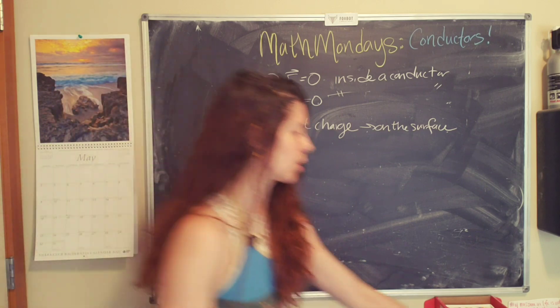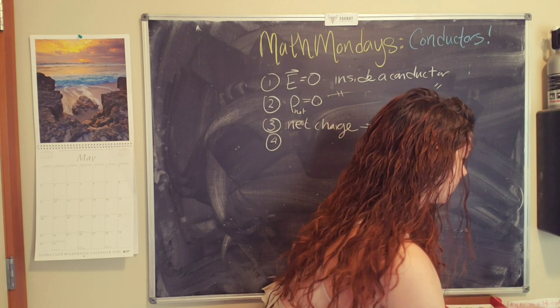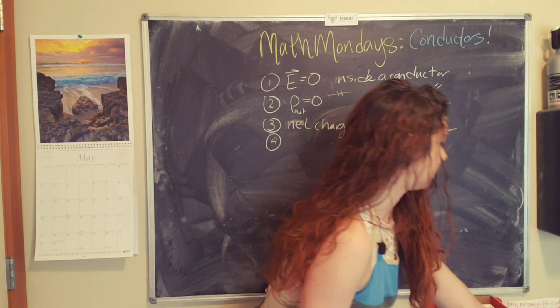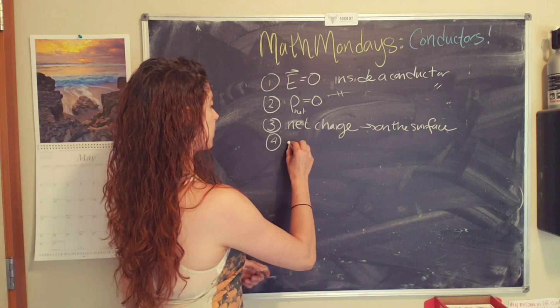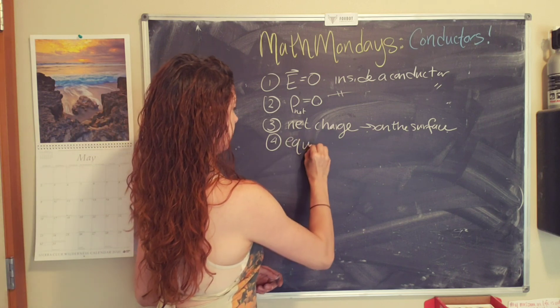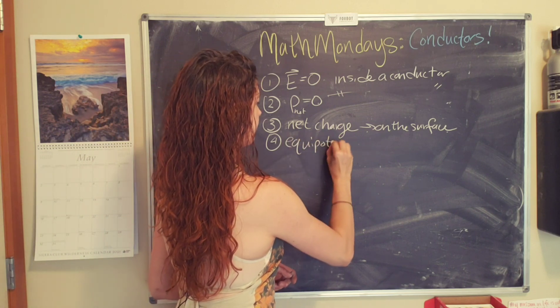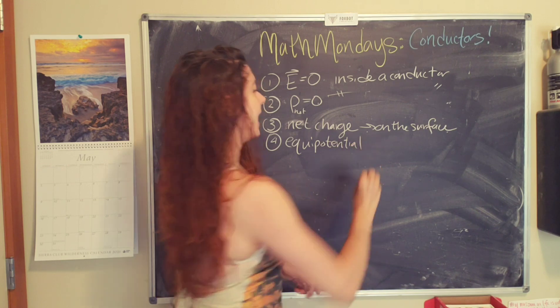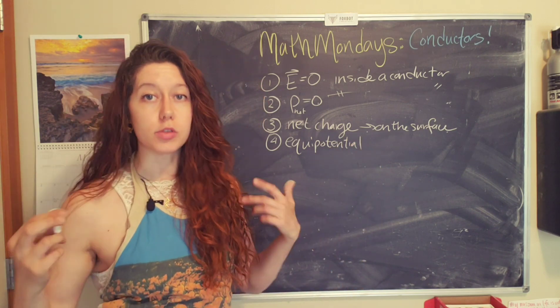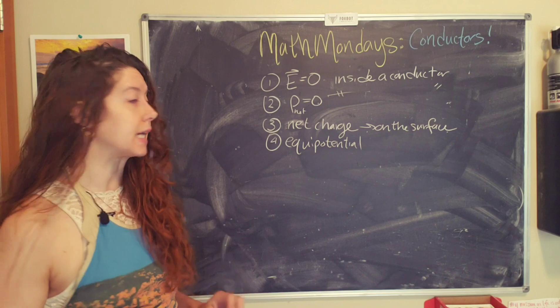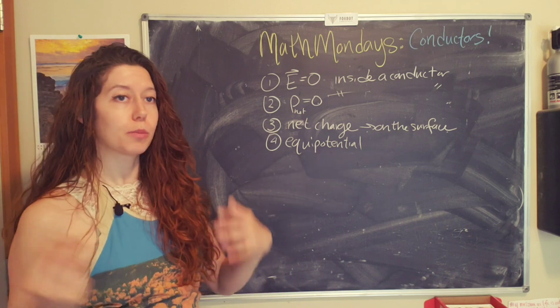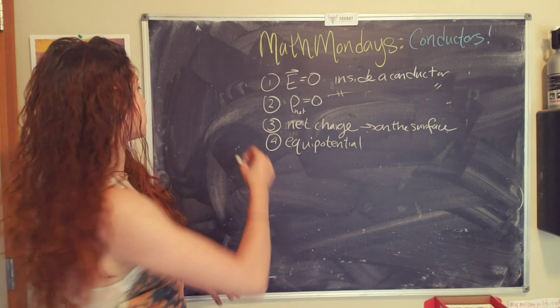Number four, I'm going to turn my notes. A conductor is an equipotential, meaning that if we look at any two points on the surface of the conductor or inside the conductor, the electric potential will be the same at those two points.